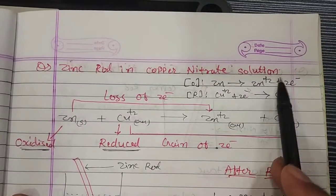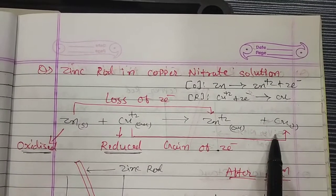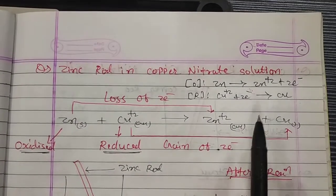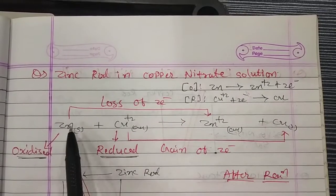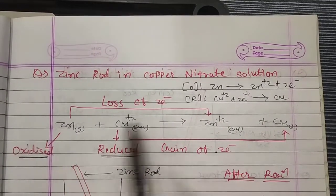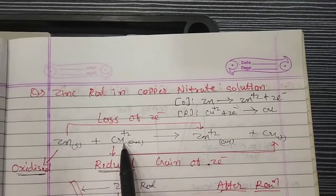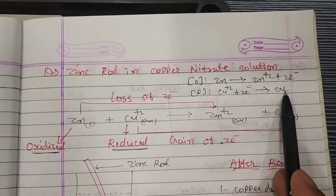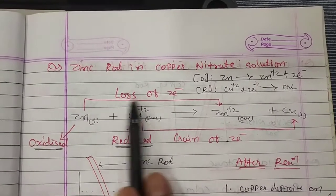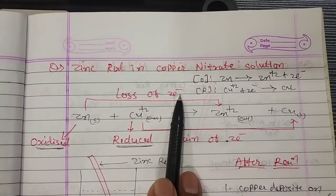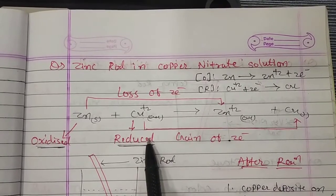This is your half-reaction, which I studied in the last session. When I combine them, it becomes a redox reaction. Zn gives Zn²⁺ — that is oxidation; Cu²⁺ plus 2 electrons gives copper — that is called reduction. According to the loss of electron definition, zinc is oxidized; with gain of 2 electrons, copper is reduced.